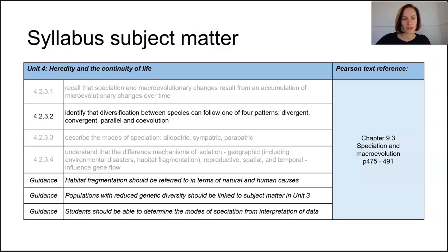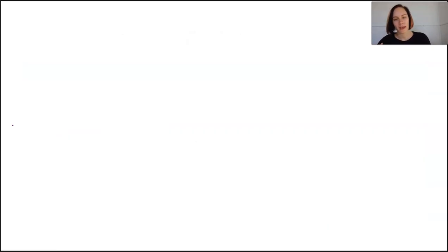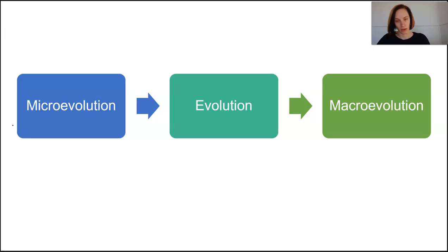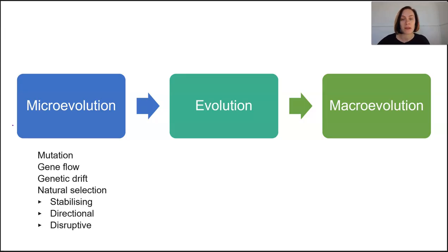We're talking about patterns of evolution or patterns of diversification, which is our main focus for this dot point. We've learned about evolution across the scale from micro evolution to macro evolution. Micro evolution occurs when allele frequencies change within a population, therefore changing observable phenotypes. This can happen through mutation, gene flow, genetic drift, and various modes of natural selection.